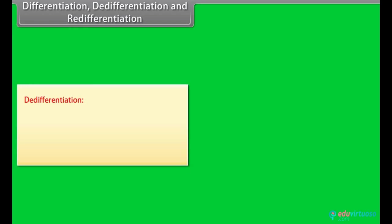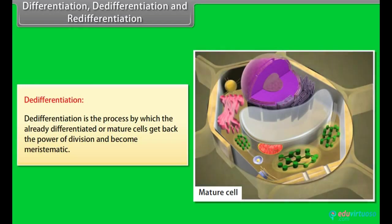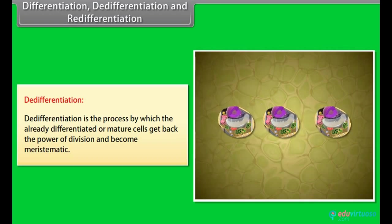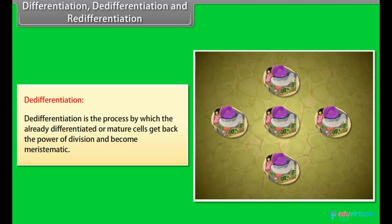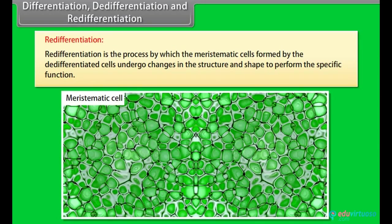De-differentiation. De-differentiation is the process by which the already differentiated or mature cells get back the power of division and become meristematic. Re-differentiation. Re-differentiation is the process by which the meristematic cells formed by de-differentiated cells undergo changes in the structure and shape to perform the specific function.